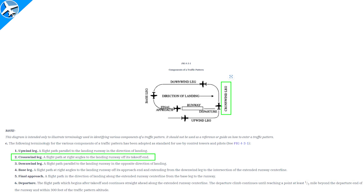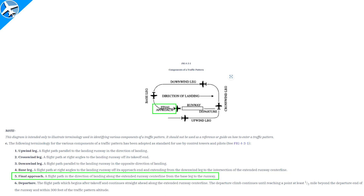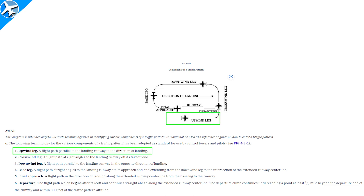Next is crosswind leg, downwind, base, and the final approach leg, which is often referred to just as final. The departure leg is sometimes referred to as the upwind leg, which is incorrect. There is a difference, as seen in the picture and also in the description below the picture.